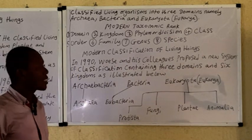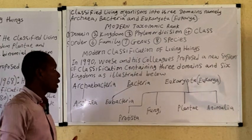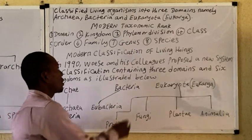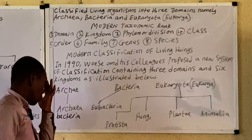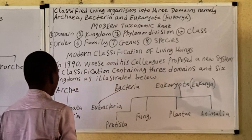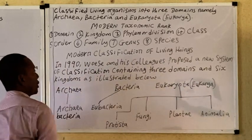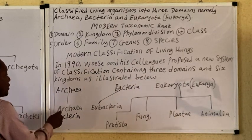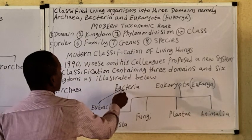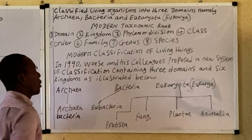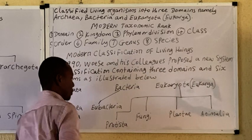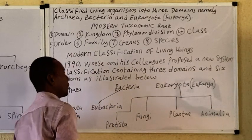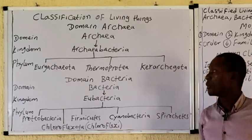Now let's look at the modern system of classification, which is based on molecular biology. In 1990, Woese and colleagues proposed a new system containing three domains and six kingdoms. The three domains are: domain Archaea, domain Bacteria, and domain Eukaryota. Under domain Bacteria there is one kingdom — the Eubacteria kingdom. Under domain Eukaryota there are four kingdoms: kingdom Protista, kingdom Fungi, kingdom Plantae, and kingdom Animalia.